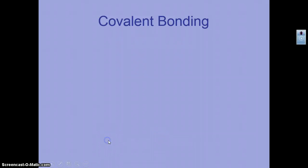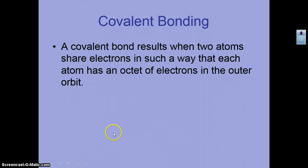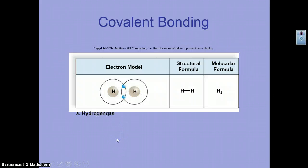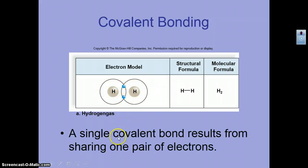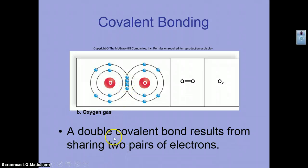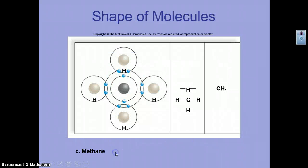Covalent bonding is sharing — two atoms share electrons to meet the octet rule. For example, in hydrogen gas, each hydrogen atom has one electron, but by sharing they can each have two in their outer shell, making them stable. You can also have double bonds: oxygen shares four electrons between two atoms instead of just two, forming a covalent double bond.